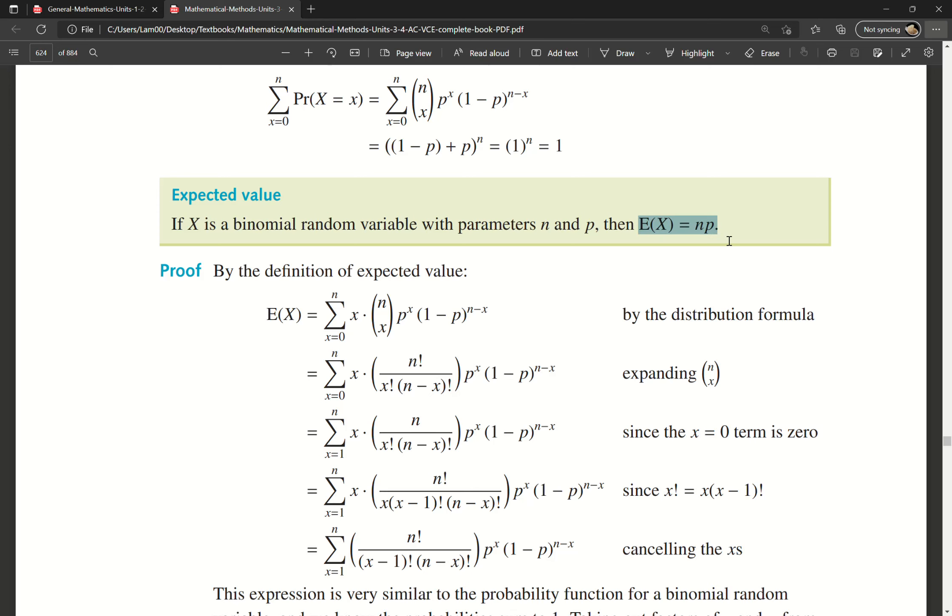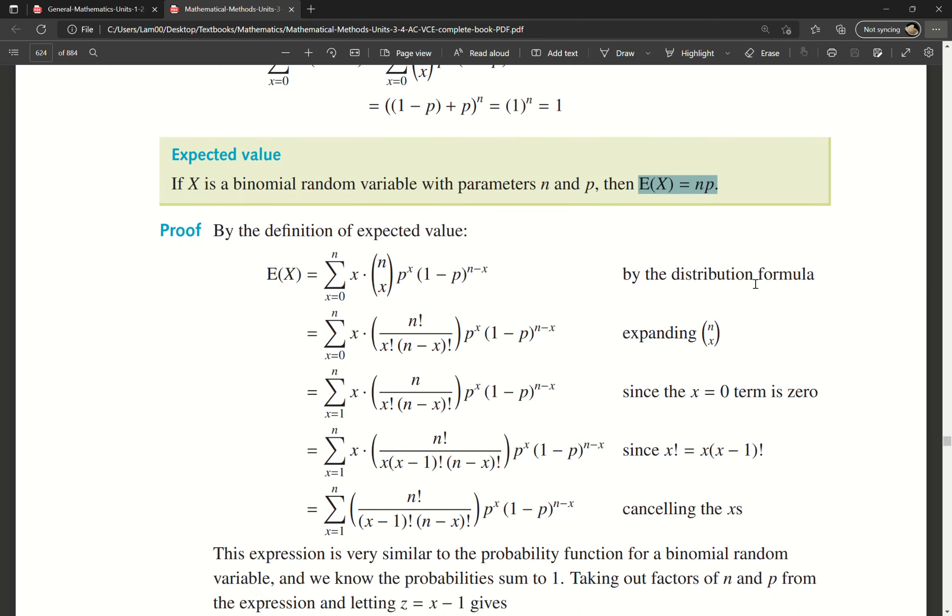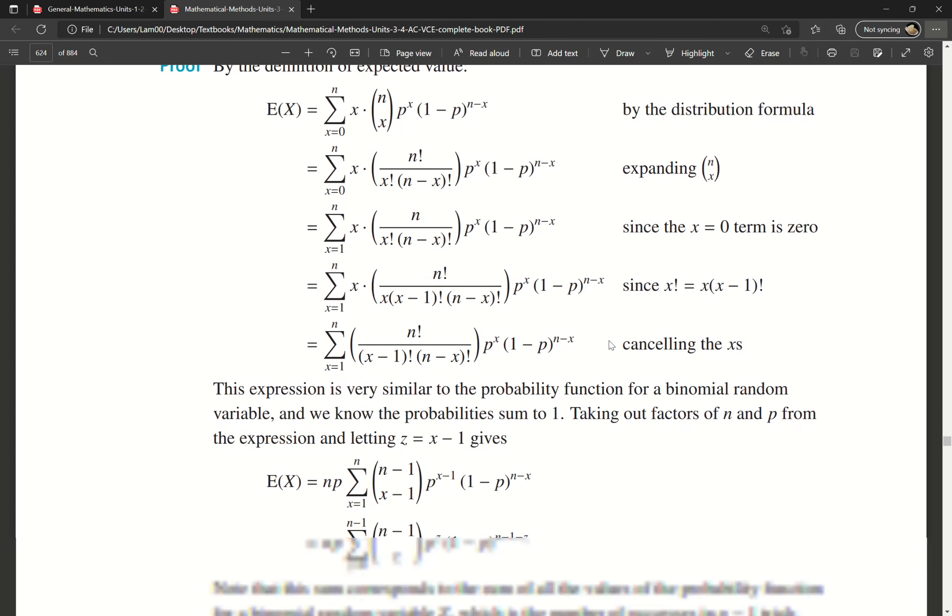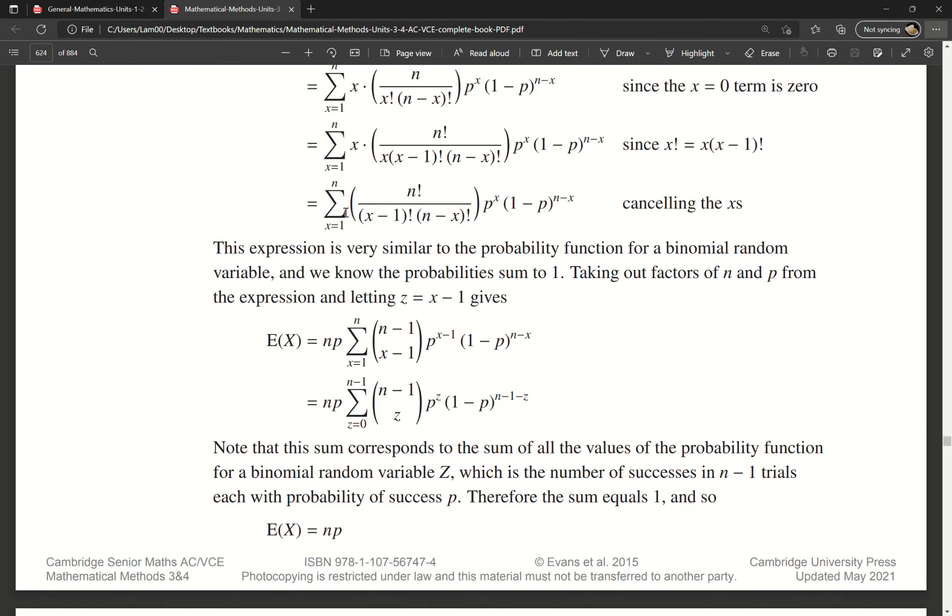We talked about how the expected value, E(X), equals n times p. This comes from the binomial theorem. Once we substitute these values in, using the binomial theorem, the expected value equals the sum of x times the combination. Once you've done all these applications, you end up with this formula.